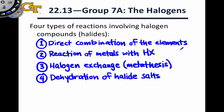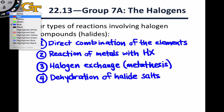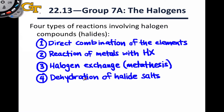In general, much of the reactivity of the halogens comes from either the oxidizing power of the elemental form, or the Lewis acidity of the halogen atoms in compounds.